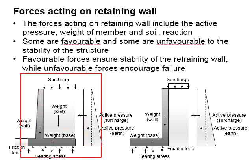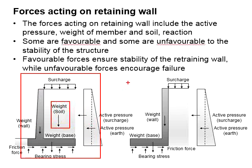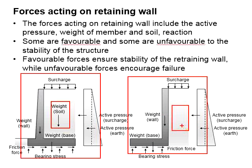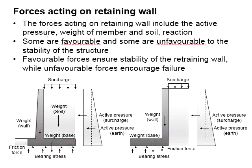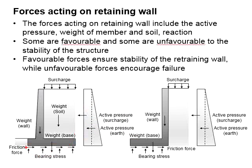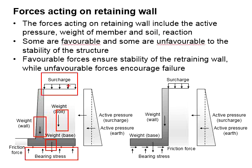For this system, the weight of the soil is considered, while for this system, the soil is not really considered. This represents the weight of the wall and the weight of the base. There are frictional forces resisting the horizontal force caused by the active pressure, and there will be bearing stresses resisting all the vertical forces acting on the retaining wall system.